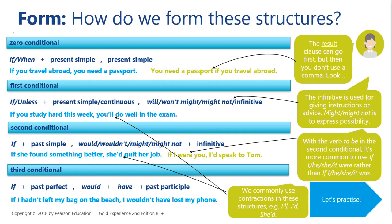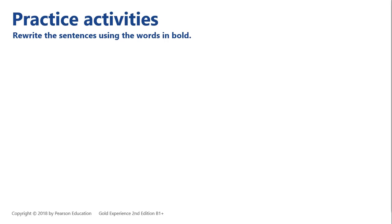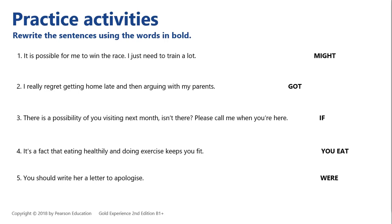Let's practice. In this activity we need to rewrite the sentences using the words in bold at the end of each line. So it is possible for me to win the race — I just need to train a lot. So: 'I might win the race if I train a lot,' or 'If I train a lot, I might win the race.' Remember, if we start with 'if' we need a comma in the middle; if we start with the result clause, then we don't use a comma. Pause the video now if you would like to think about these sentences — I'm going to show you the answers now.